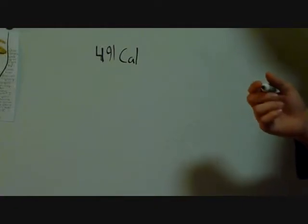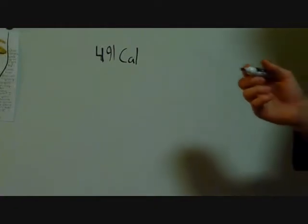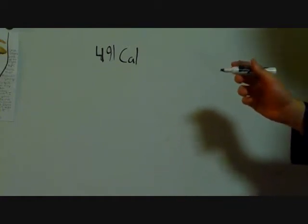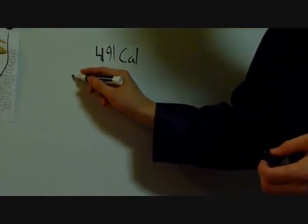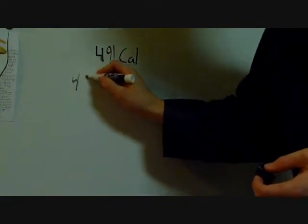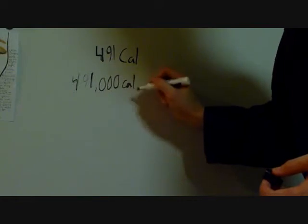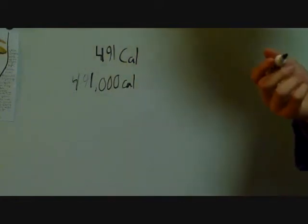There are 491 calories in one quarter pounder with cheese meal from McDonald's. Therefore, there is actually 491,000 calories in one meal.